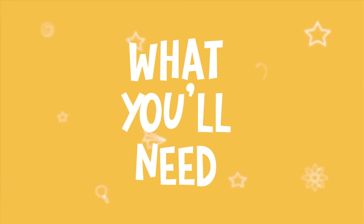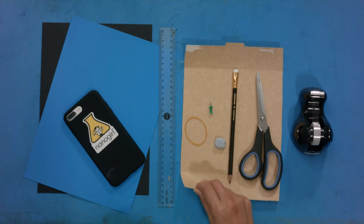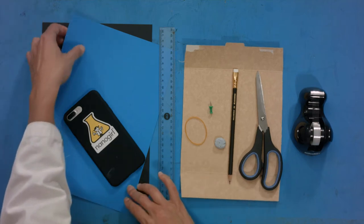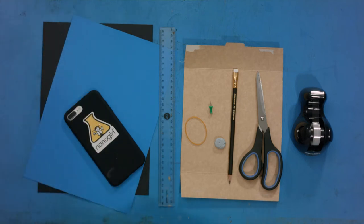For this experiment, you will need some tape, scissors, a pencil, blue tack or plasticine, a push pin, an elastic band, three sheets of card. I've got some cereal box card here, or you can also replace two sheets with paper, a phone or a tablet with a torch on it, and a ruler.